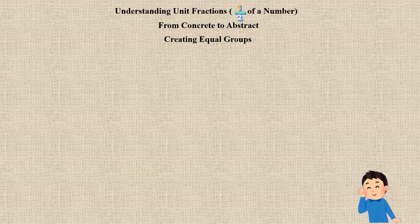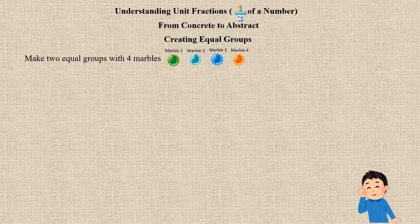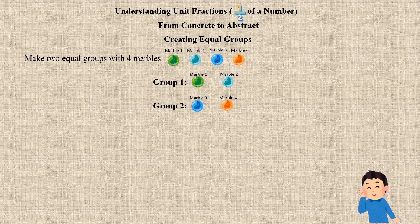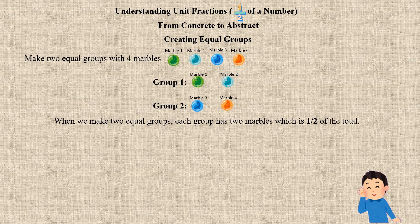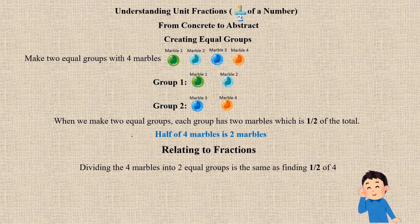This is mainly for beginners, so let us start from concrete and go to abstract — creating equal groups. Let us start with something simple: marbles. Imagine you have 4 marbles. To find half of 4 marbles, we need to arrange them into two equal groups, where each group has the same number of marbles. First group: 2 marbles. Second group: 2 marbles. When we make 2 equal groups, each group has 2 marbles, which is half of the total.